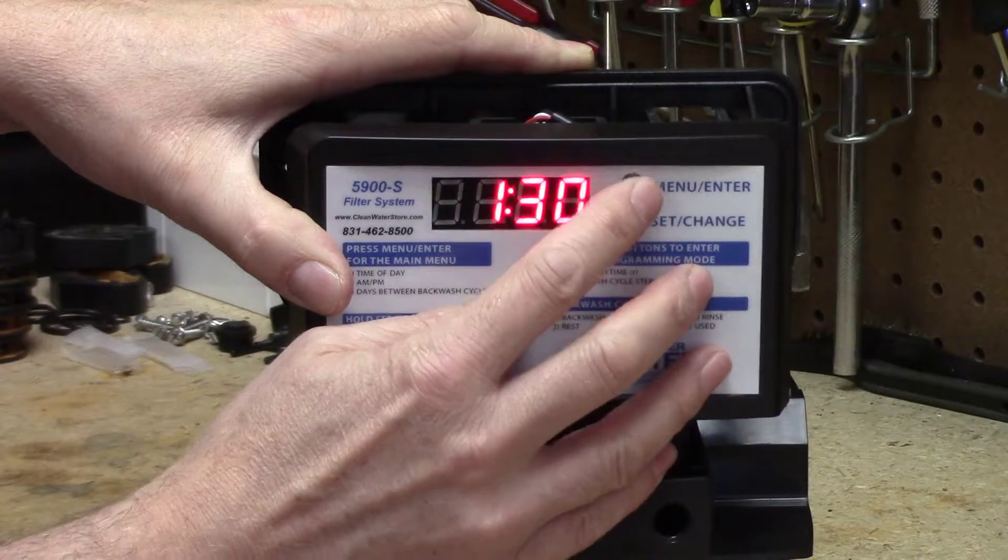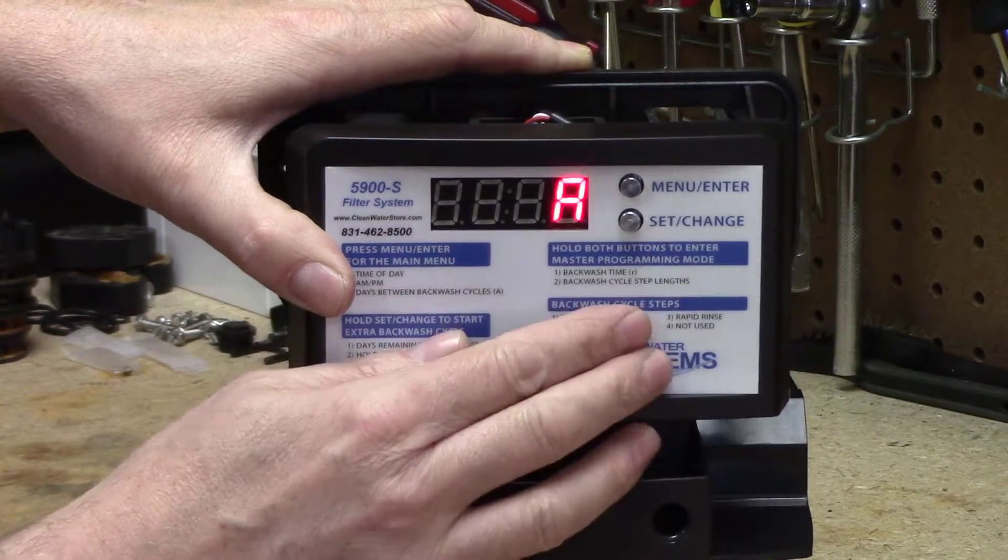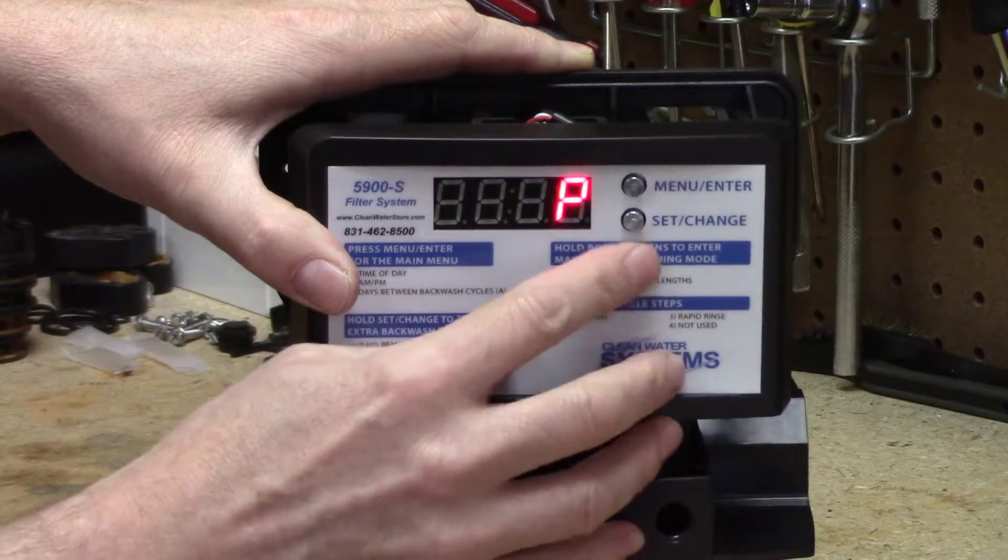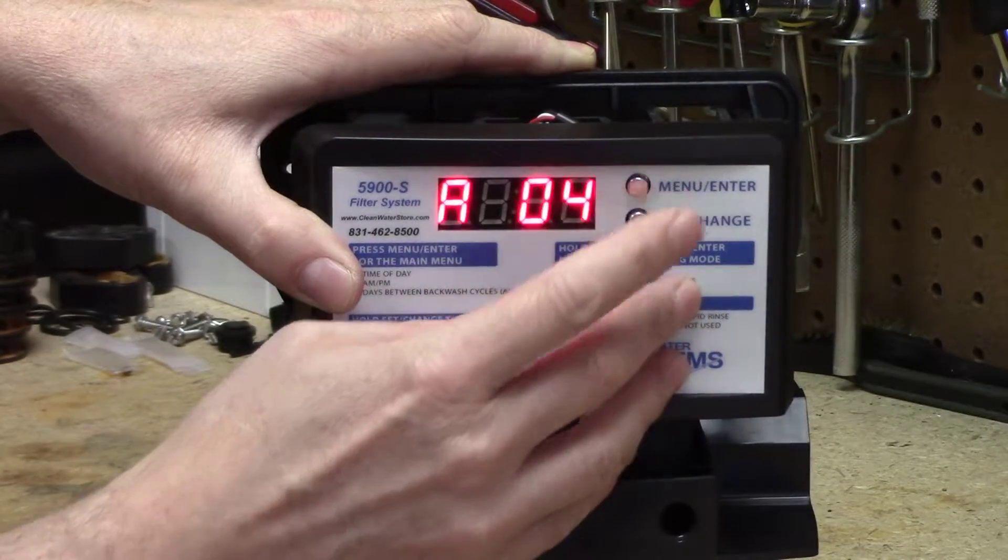When you press the menu enter button again with all of it flashing, then it's going to ask you to choose AM or PM. We'll go with PM. I was hitting the set change to make it go back and forth. Hit the menu enter once you got it where you like it.